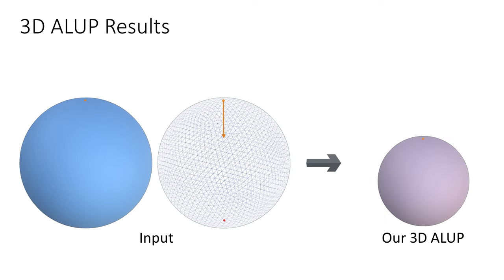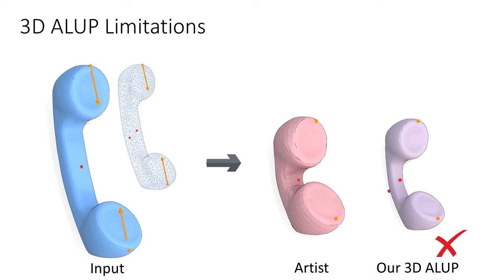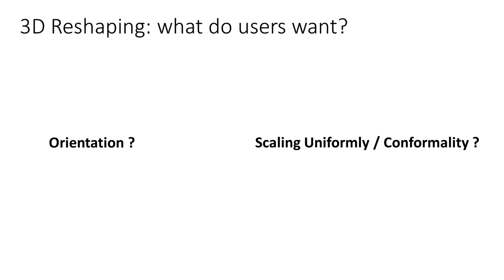Here's an example output. While this works well for some content, for other gestures, naively extending ALEP to 3D creates output which diverges from human expectations. Our observations suggest that while users expect 3D reshaping to preserve orientation, they do not expect or desire uniform scaling.